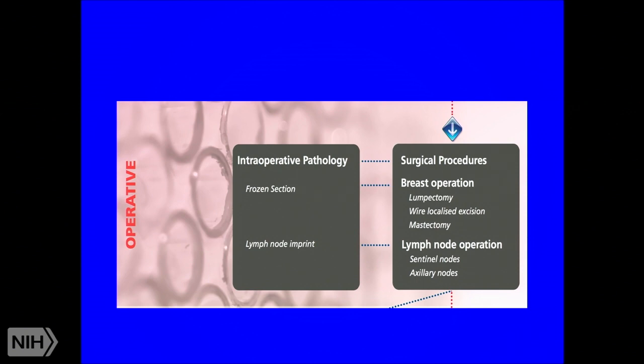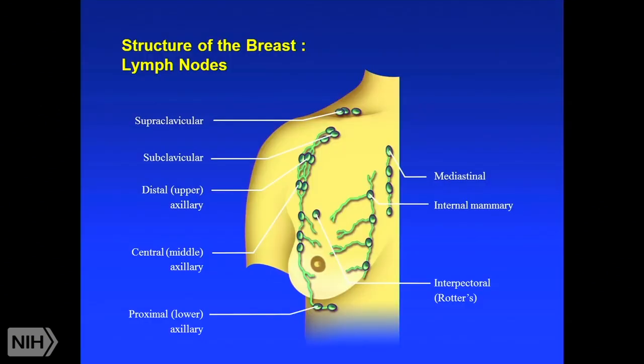Lymph node dissection can be either a sentinel node dissection or an axillary node dissection — these are the nodes most important in breast cancer. The relevant nodal chains include the axillary chain, the supraclavicular area, subclavicular area, mediastinal nodes, and internal mammary nodes.